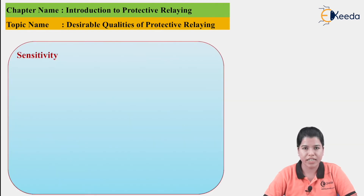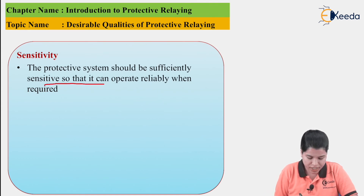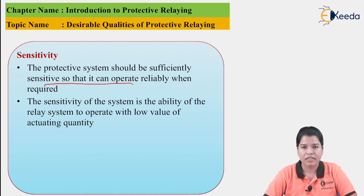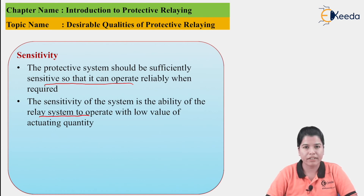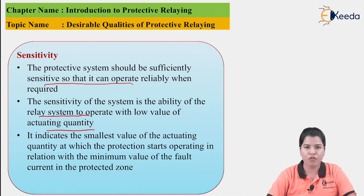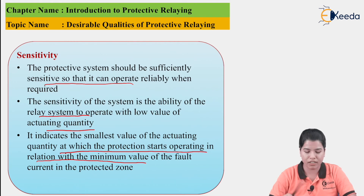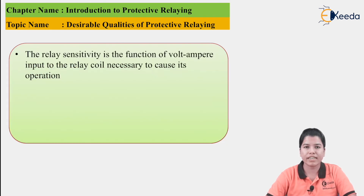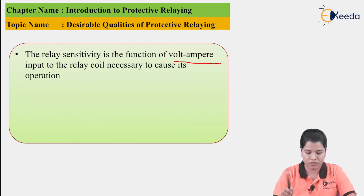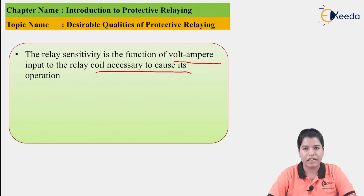The next desirable quality is Sensitivity. The protective system should be sufficiently sensitive so that it can operate reliably when required. Sensitivity is defined as the ability of the relay system to operate with a low value of actuating quantity — the relay must operate even for lower values of the actuating quantity. It indicates the smallest value of the actuating quantity at which the protective system starts operating in relation to the minimum fault current in the protected zone. Relay sensitivity is a function of the volt-ampere input to the relay necessary to cause its operation.